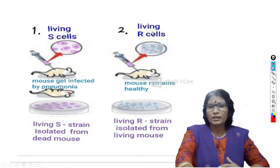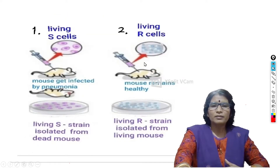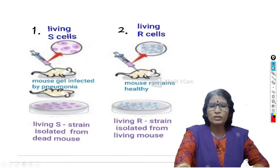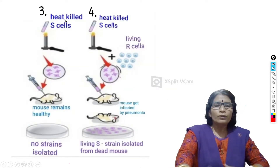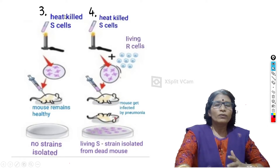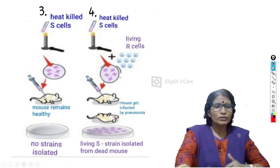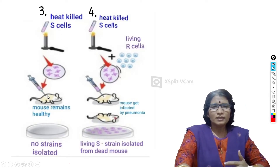In the second experiment, the scientist injected living rough Streptococcus pneumoniae cells into a mouse. Since rough cells are not virulent, the mouse did not get infected by pneumonia, remained healthy, and the living R cells were isolated from the living mouse. In the third experiment, living smooth cells were heated and killed in a test tube. These heat-killed smooth cells were injected into a mouse. Since they were killed, they could not cause pneumonia, so the mouse remained healthy and no strain was isolated from the mouse.